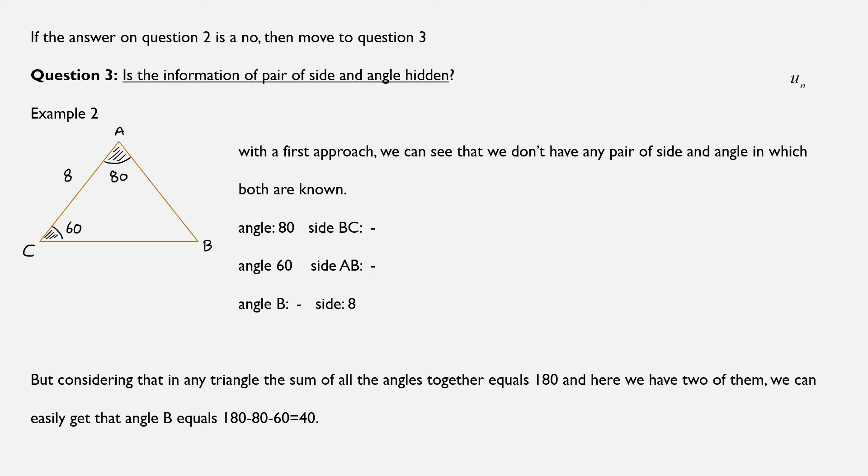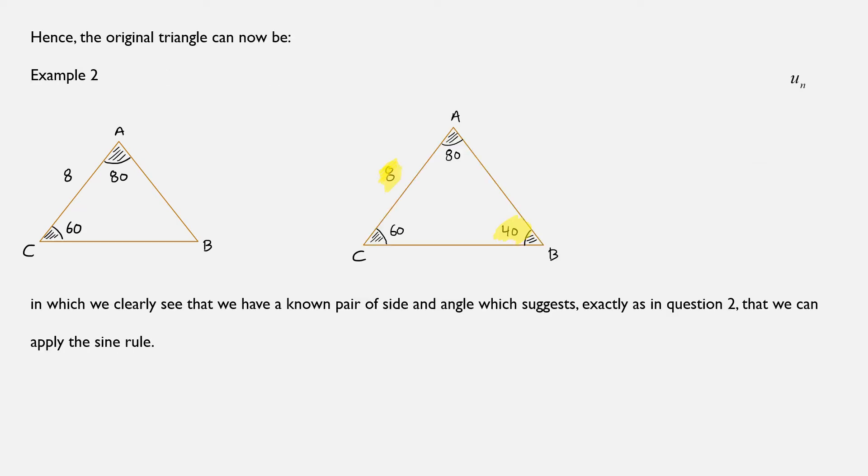So in this case, angle B will be equal to 180 minus 80 minus 60, which after all is equal to 40. Hence, the original triangle we had can now become the right one in which we know all three angles and one side.